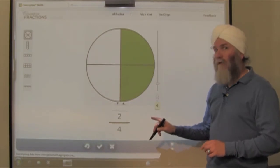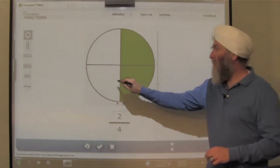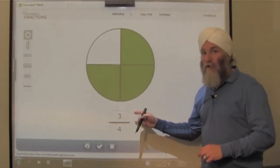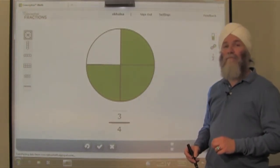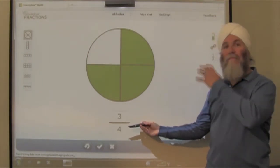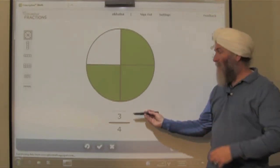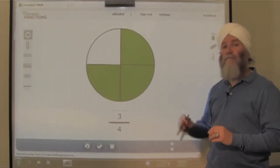Two shaded parts, the numerator is two. Three shaded parts, the numerator is three. But the denominator, the number of equal parts, it remains the same. The denominator is the name. How many equal parts? Numerator is the number of shaded parts.